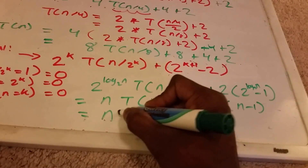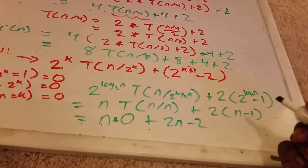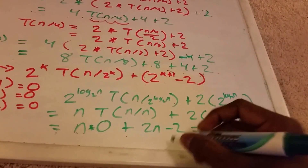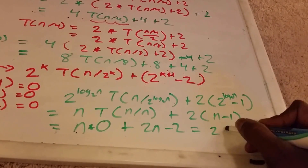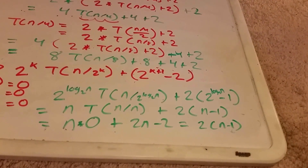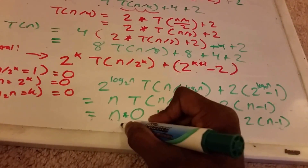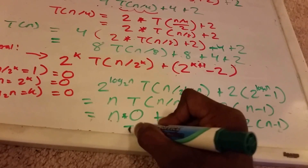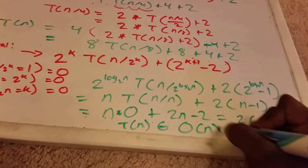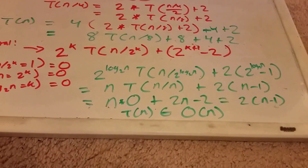So multiplying by 0 plus 2N minus 2, you can see that this equals 2 times (N minus 1). Therefore T(N) belongs to big O of N.